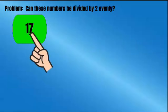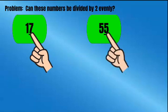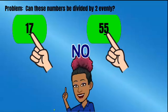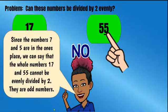So let's solve this problem. Can these numbers be divided by two evenly? Since the numbers 7 and 5 are in the ones place, we can say that the whole numbers 17 and 55 cannot be evenly divided by two. So therefore, they are odd numbers.